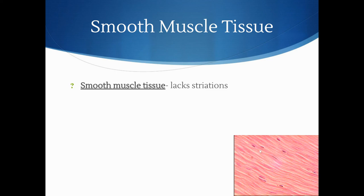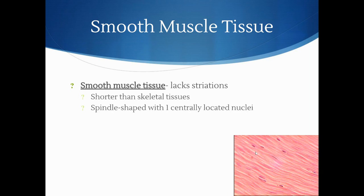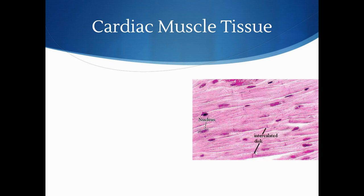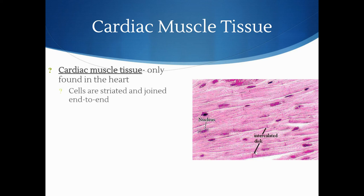Smooth muscle tissue lacks striations — there's no striped look. The cells are shorter than skeletal muscle, spindle-shaped, with one centrally located nucleus. Smooth muscle composes hollow internal organs like the stomach, intestines, bladder, uterus, and blood vessels. It's under involuntary control — you don't need to think about digesting your food or moving blood through blood vessels, which is fortunate.